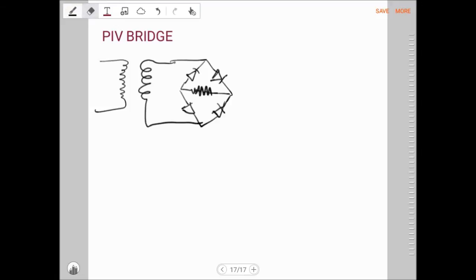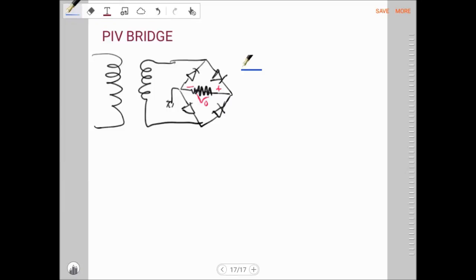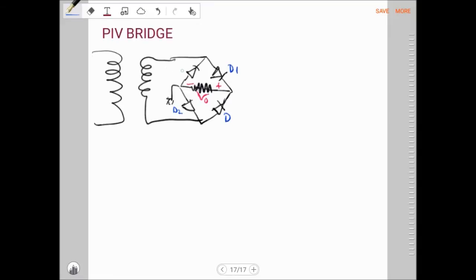Let's draw it again. There's our bridge circuit. The output is taken across the resistor here, V_out. Now let's label the diodes: D1, D2, D3, D4, similar to the one in your textbook.